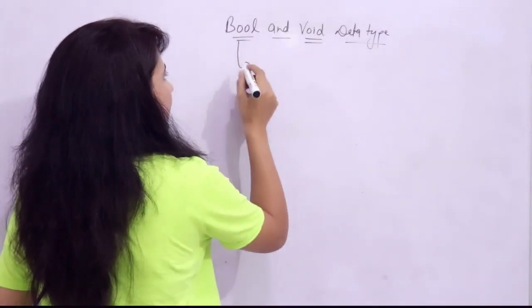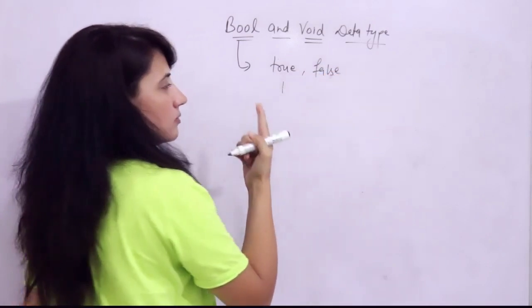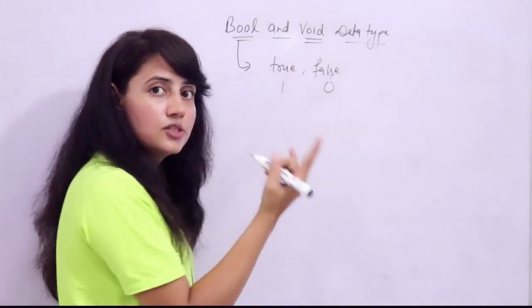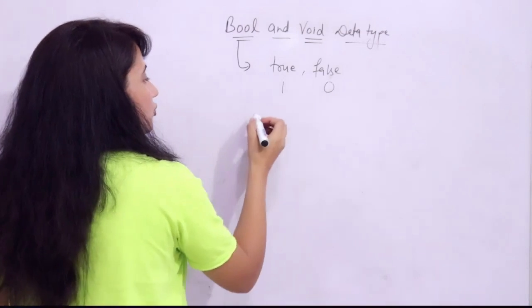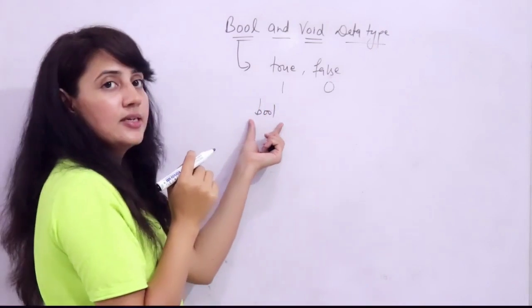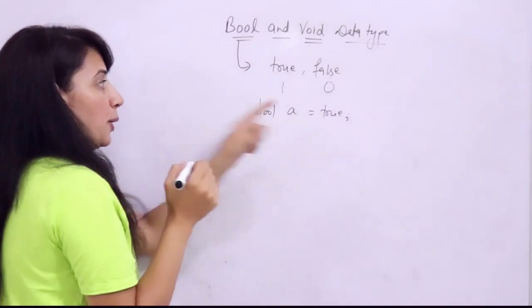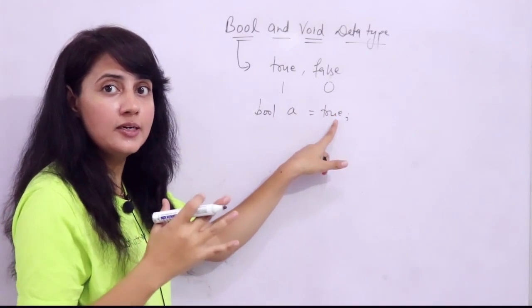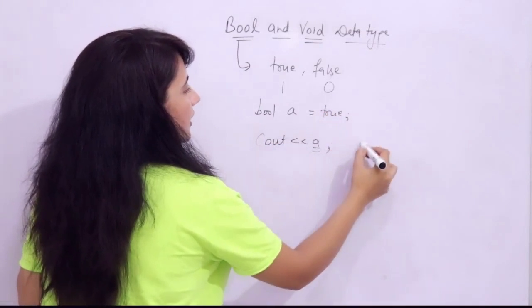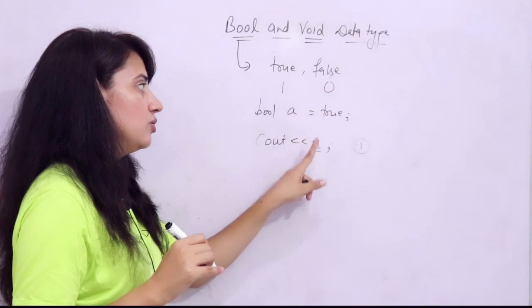First, let's look at the bool data type. It can take two values: true or false. True has a default integer value of 1, and false is 0. You can declare it like: bool a = true. True is implicitly converted to int, so if you print a, it will print 1. If you write false, it will print 0.